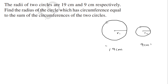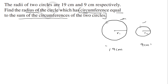Now, what we have to find: we have to find the radius of that circle which has circumference equal to the sum of the circumferences of these two circles. So we have to find a new radius of a circle which is equal to the sum of these two circumferences.